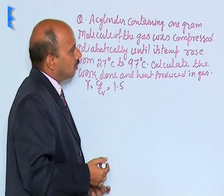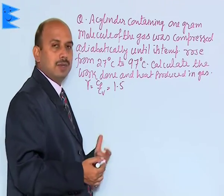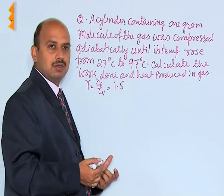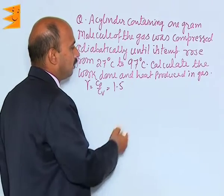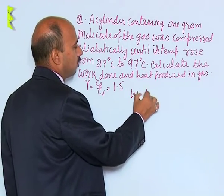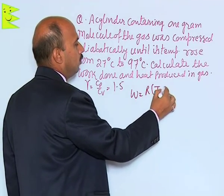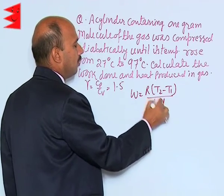So now see a compression is taking place and adiabatic compression is taking place. We can write here the formula for work done is equal to R into T2 minus T1 upon 1 minus gamma.